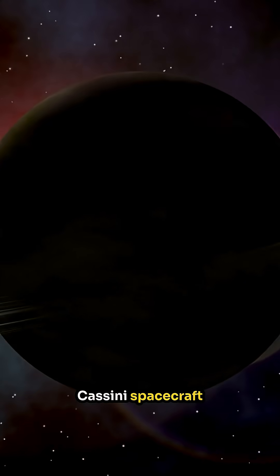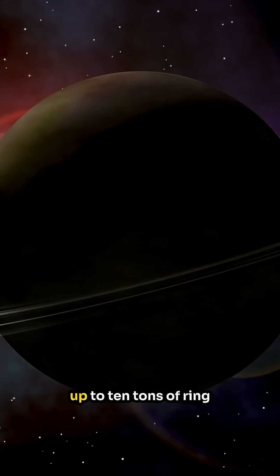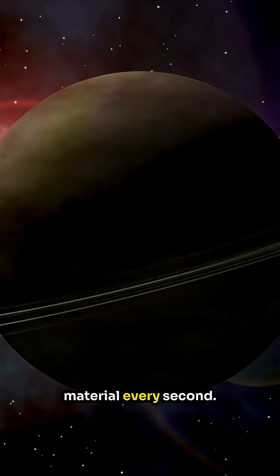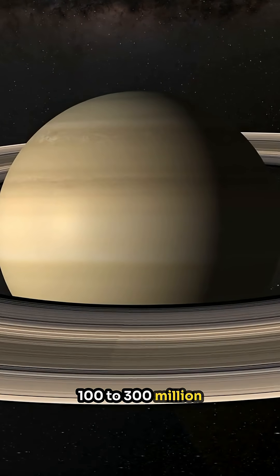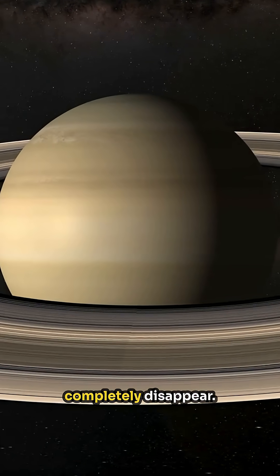Data from NASA's Cassini spacecraft shows that Saturn loses up to 10 tons of ring material every second. That means, in about 100 to 300 million years, the rings could completely disappear.